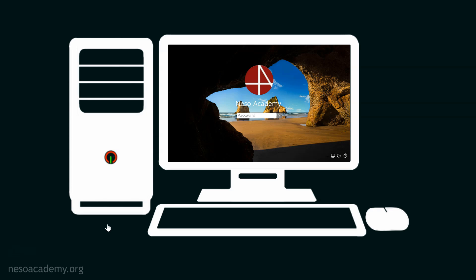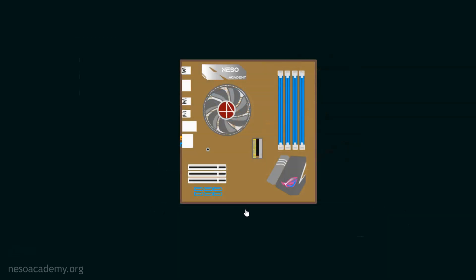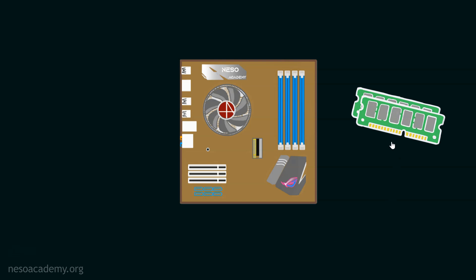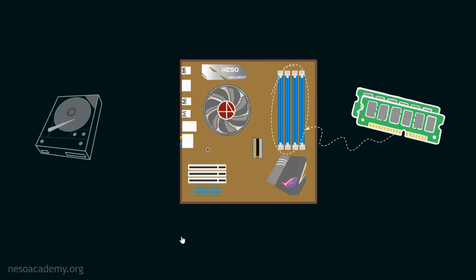If we open up this cabinet, the biggest component we see is the motherboard, to which various different components are connected, residing inside the cabinet itself. At first, we have the main memory — the RAMs — connected to the motherboard using RAM Modules, positioned vertically. Apart from the motherboard and main memory, inside the cabinet we also have the auxiliary memory or secondary storage device. For this illustration, let's assume we have a hard disk drive, which is connected to the motherboard using SATA cables.